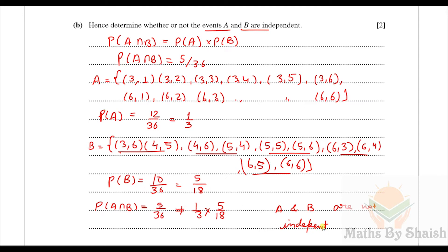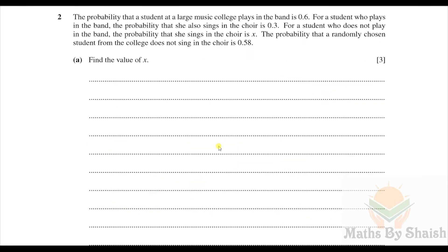That's it for question one. Question two: the probability that a student at a large music college plays in the band is 0.6. For a student who plays in the band, the probability that she also sings in the choir is 0.3. For a student who does not play in the band, the probability that she sings in the choir is x. The probability that a randomly chosen student does not sing in the choir is 0.58. Find x.